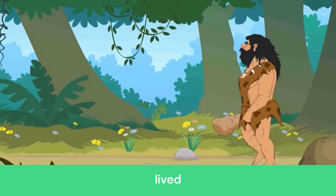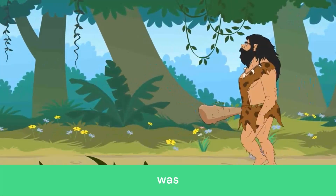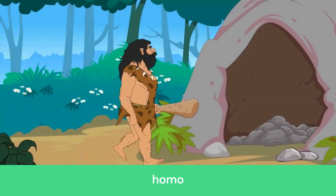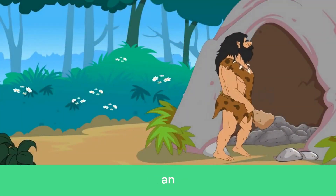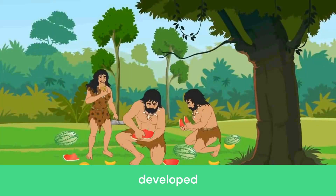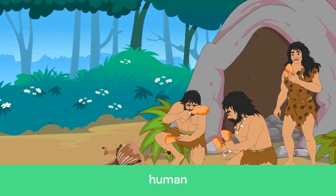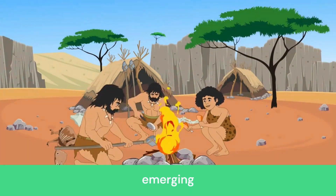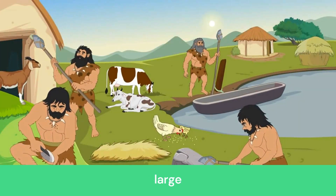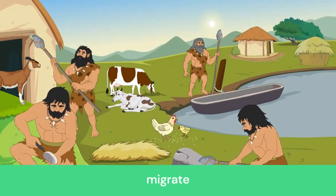Homo habilis, which lived around 2.4 to 1.4 million years ago, was the first species of the Homo genus. They exhibited an increase in brain size and developed tool-making skills, a significant advancement in human evolution. Homo erectus, emerging about 1.9 million years ago, had an even larger brain and was the first hominin to migrate out of Africa.